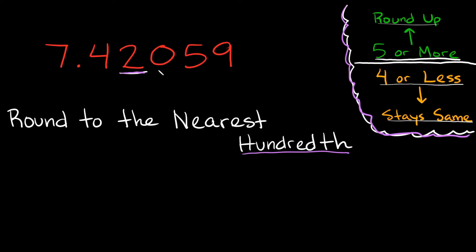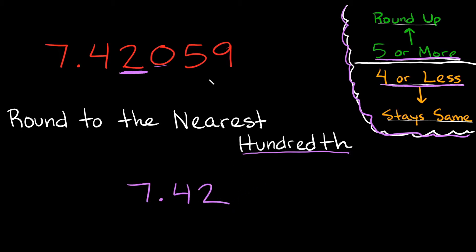The number next to it — the zero — is going to determine whether it stays the same or gets rounded up to a three. Since we have a zero here, does that apply to five or more, or four or less? In this case it's four or less, so the number in the hundredths place is going to stay the same. Our problem says round to the nearest hundredth, so our answer would be seven point four two.